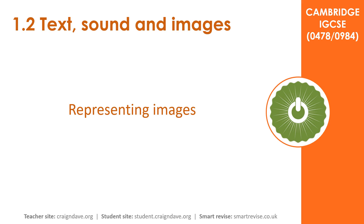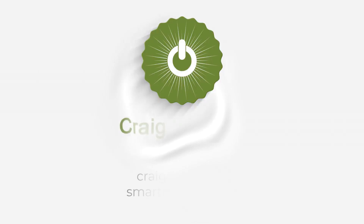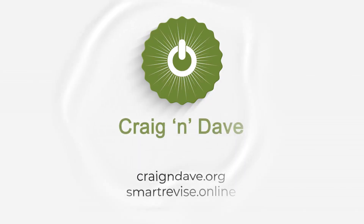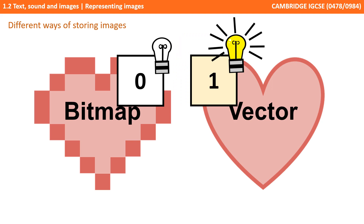In this video we explore how images are represented in a computer system. As we know, everything in a computer system must be stored in binary, and this includes images. There are two ways of storing images in binary: one is called a bitmap and the other is called a vector.